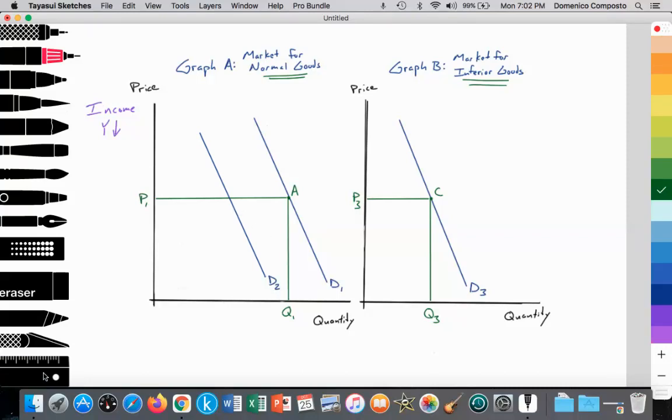Reducing the quantity of consumption from Q1 to Q2, or from point A along D1 to point B along D2. What's the impact on the total revenue? It's reduced for firms that are offering normal goods.